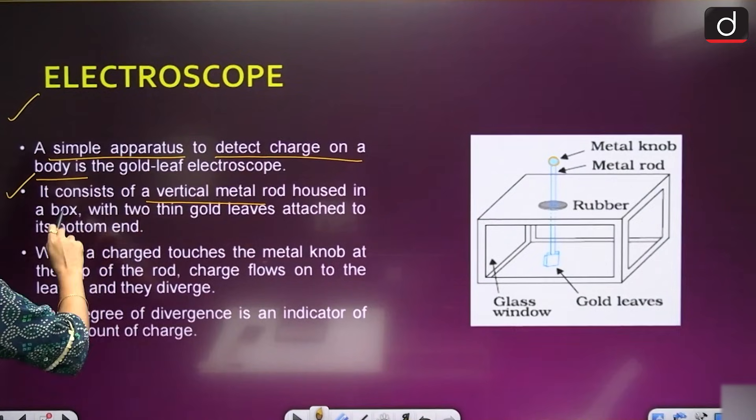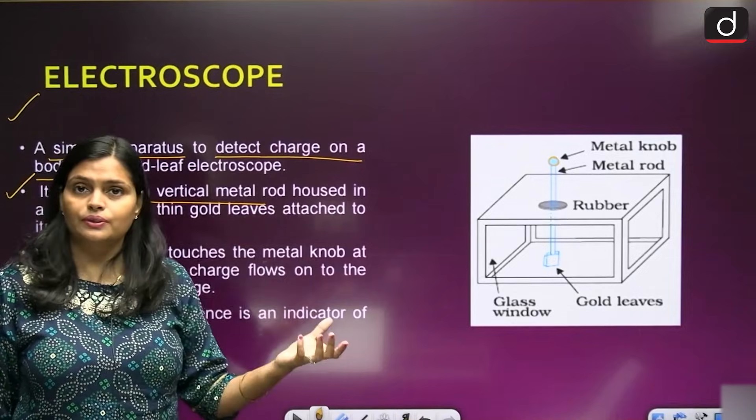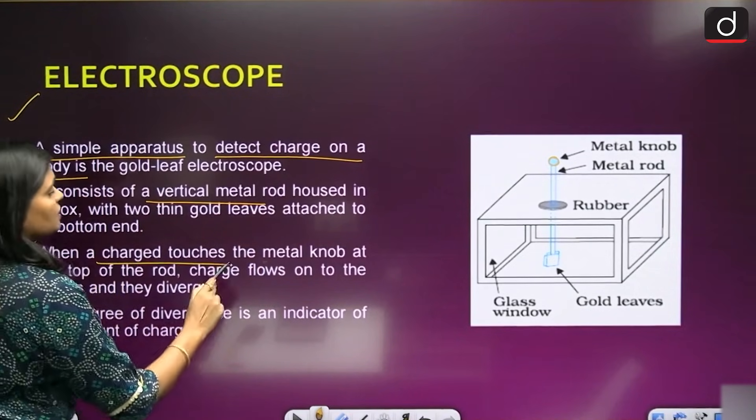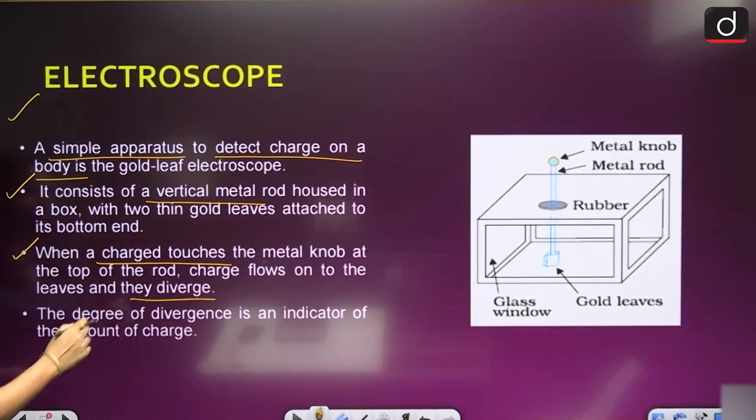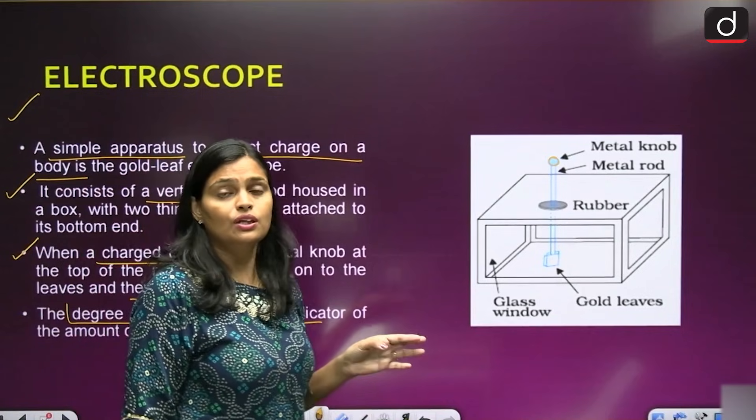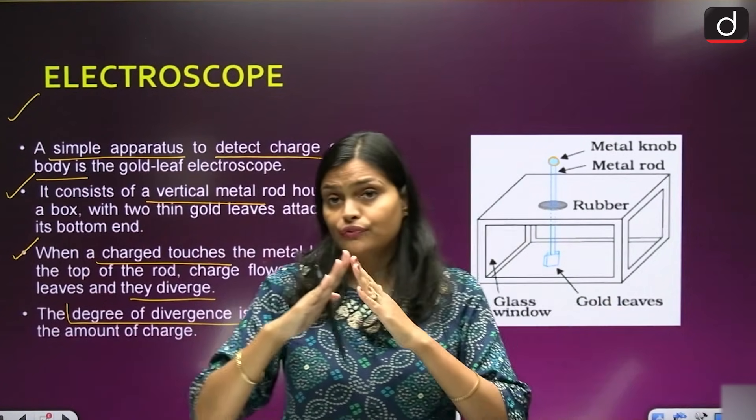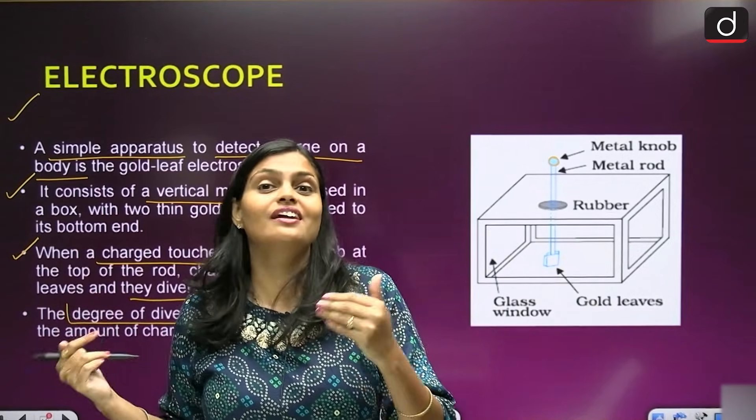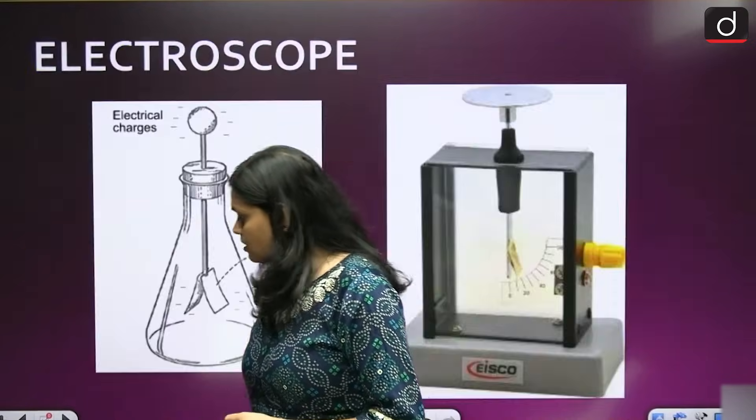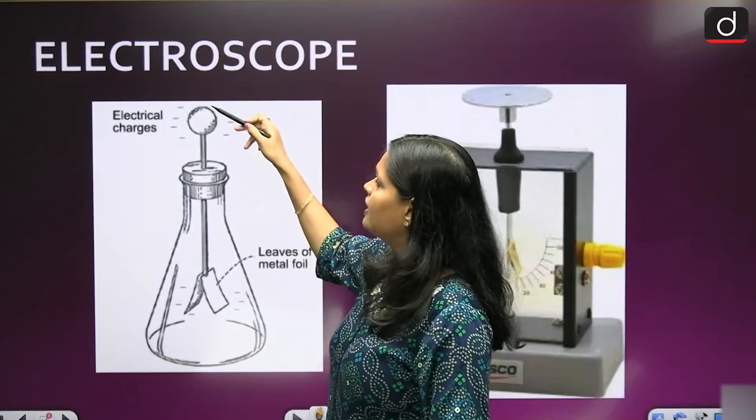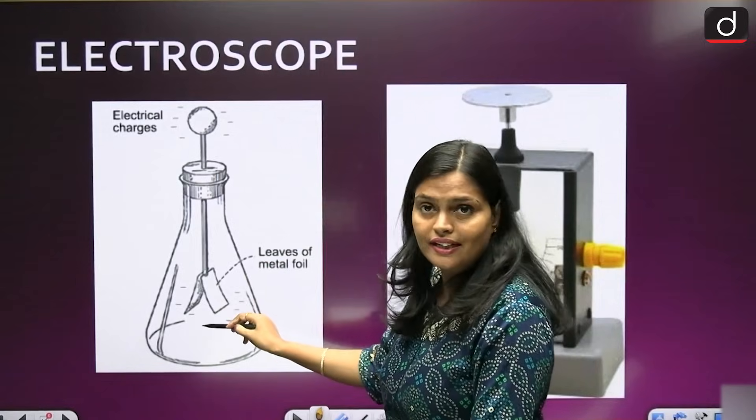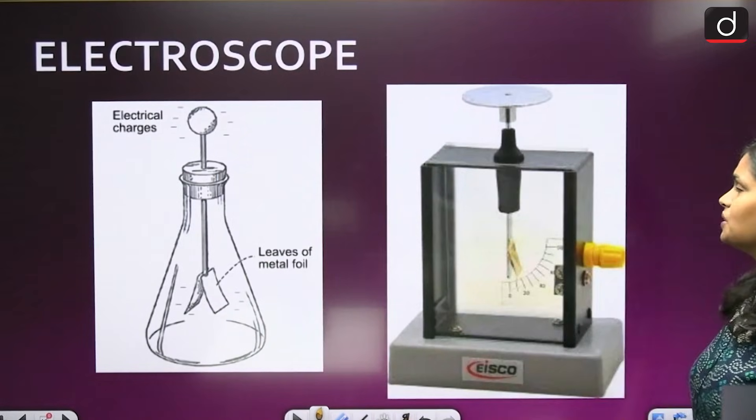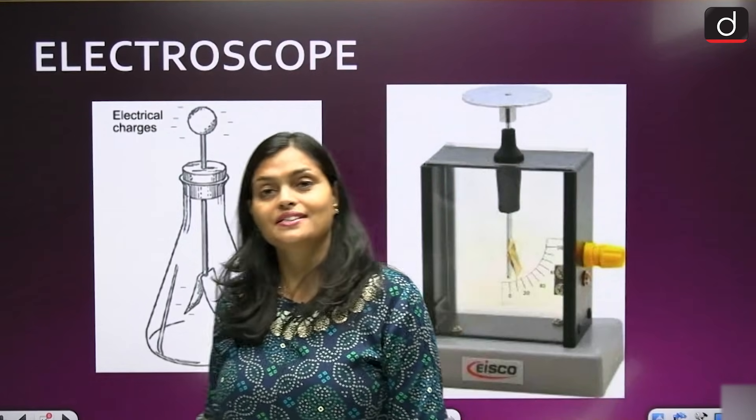It consists of a metal rod housed in a box with two thin gold leaves attached to its bottom end. When a charged body touches the metal knob at the top of the rod, the charge flows onto the leaves and they diverge. The degree of divergence is an indicator of the amount of charges. The charge is transferred and both the leaves get negative charge, and then they started separating with each other. The degree of separation tells you the intensity of charges.